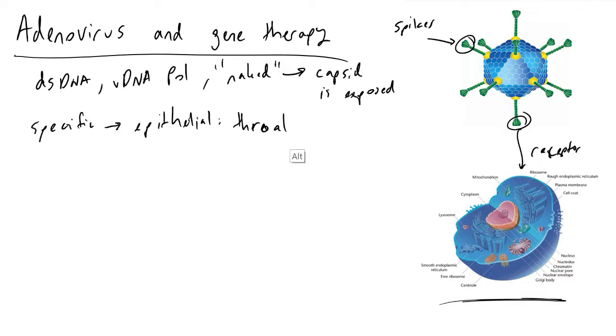What will happen is these spikes will bind to receptors, specifically they're going to be called CAR receptors that exist only on epithelial tissues because viruses are incredibly specific. After this binding event happens, another protein called integrin will work with the CAR receptor and it's going to perform a process called endocytosis.